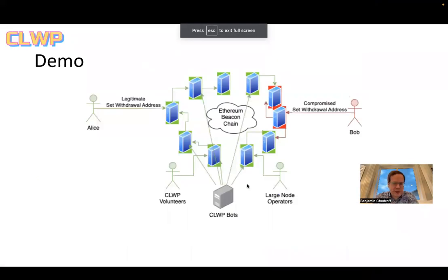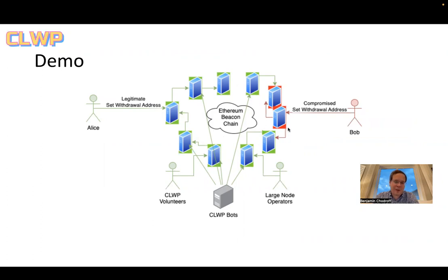Once you've submitted this, our CLWP bots, volunteers, and large node operators are going to start taking your valid submission and loading it onto their various nodes. This gives you an advantage: normally you would only be submitting to a single node. With CLWP, we'll be broadcasting simultaneously to many, many nodes very quickly. This gives you a statistical advantage over any potential compromise — if somebody else did have your seed phrase, they would likely only be able to compete with one or two nodes. It all comes down to chance, but it is a best practice, and regardless of whether you're compromised or not, you should be setting your withdrawal address as early as possible.